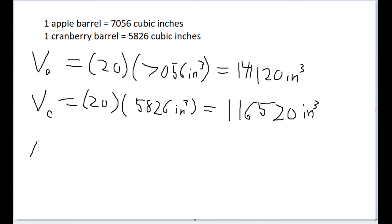Now let's find that discrepancy, or I'll call that delta V, or the change in the volume. The discrepancy in volume is going to be equal to V sub A minus V sub C. I'm starting with V sub A first, because we're looking for a distance here. And the volume of 20 apple barrels is clearly much larger than the volume of 20 cranberry barrels. The apple barrels are larger.